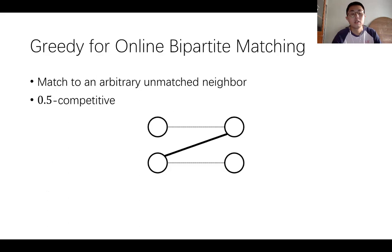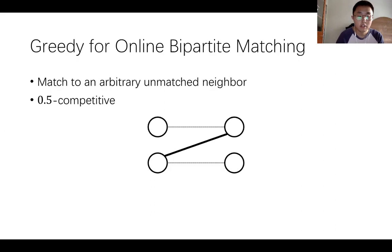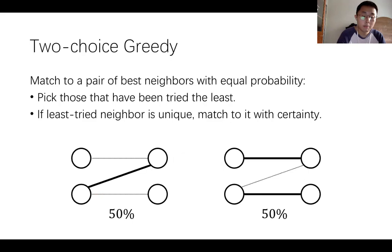To see the motivation of how to break the 0.5 barrier, let's consider a simple greedy algorithm for classical online bipartite matching: match each online vertex to an arbitrary unmatched offline neighbor. It is well known that this is 0.5 competitive. To break this bound, it is necessary to involve randomness. Let's consider a very simple randomized algorithm: greedily pick two best offline neighbors which have been tried the least, and then match it to one of them with equal probability.